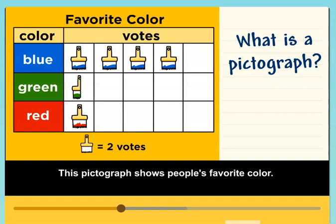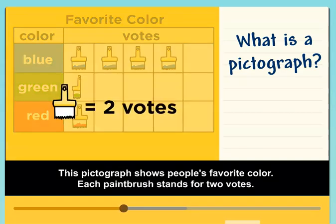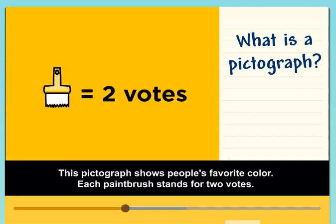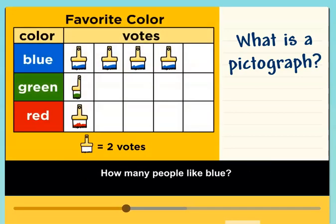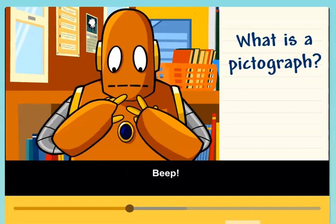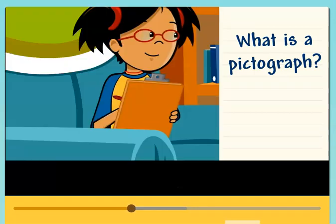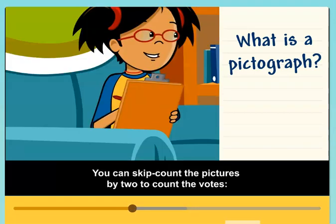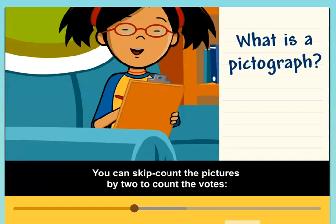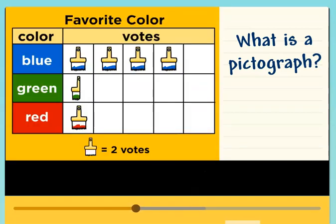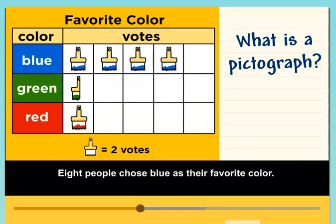This pictograph shows people's favorite color. Each paintbrush stands for two votes. How many people like blue? You can skip count the pictures by two to count the votes: two, four, six, eight. Eight people chose blue as their favorite color.